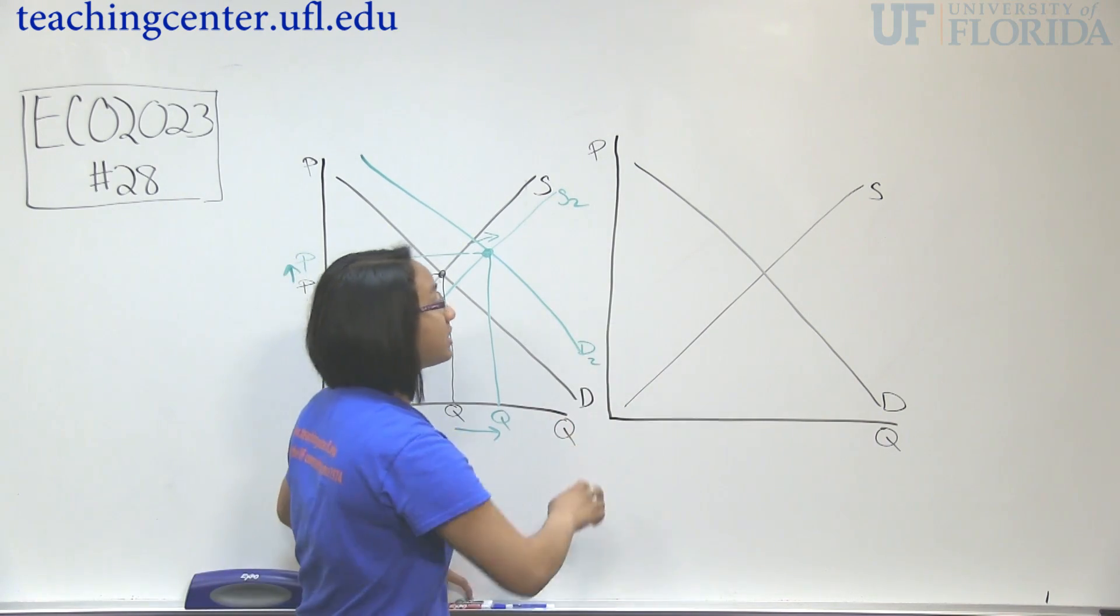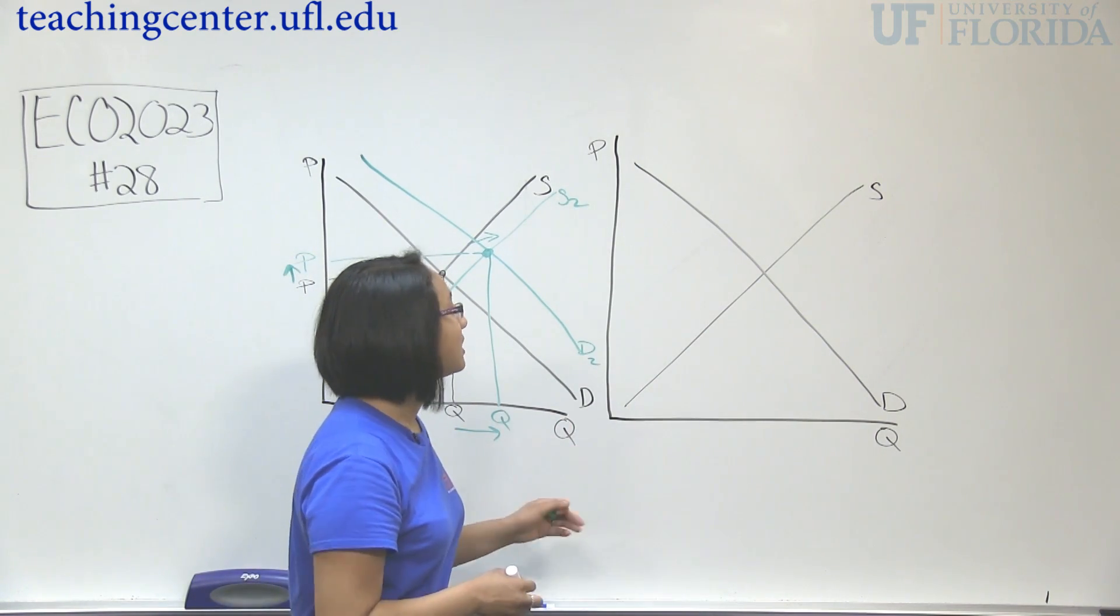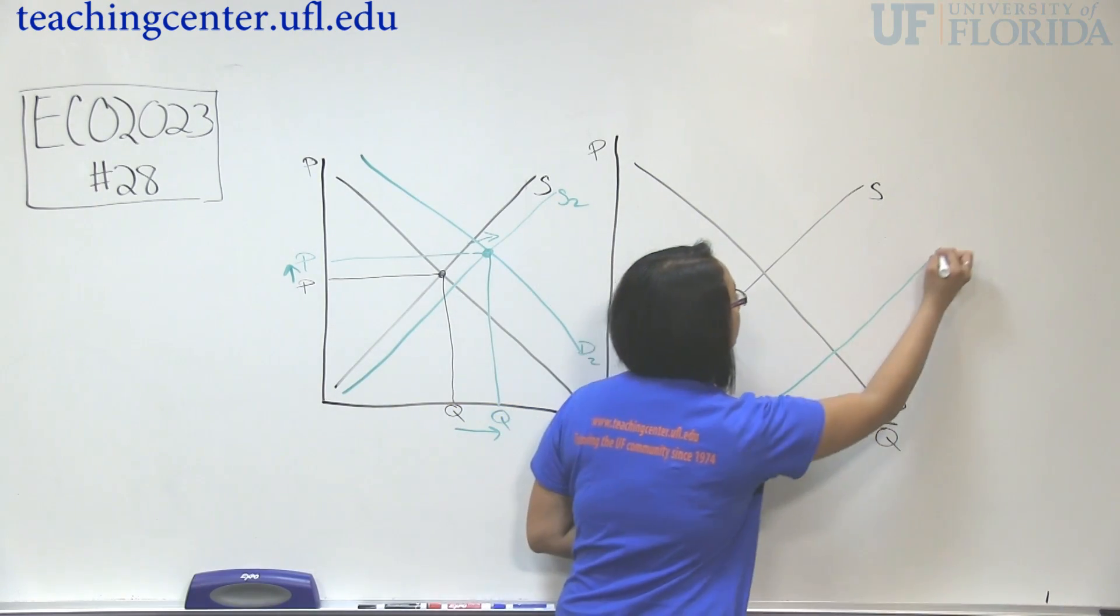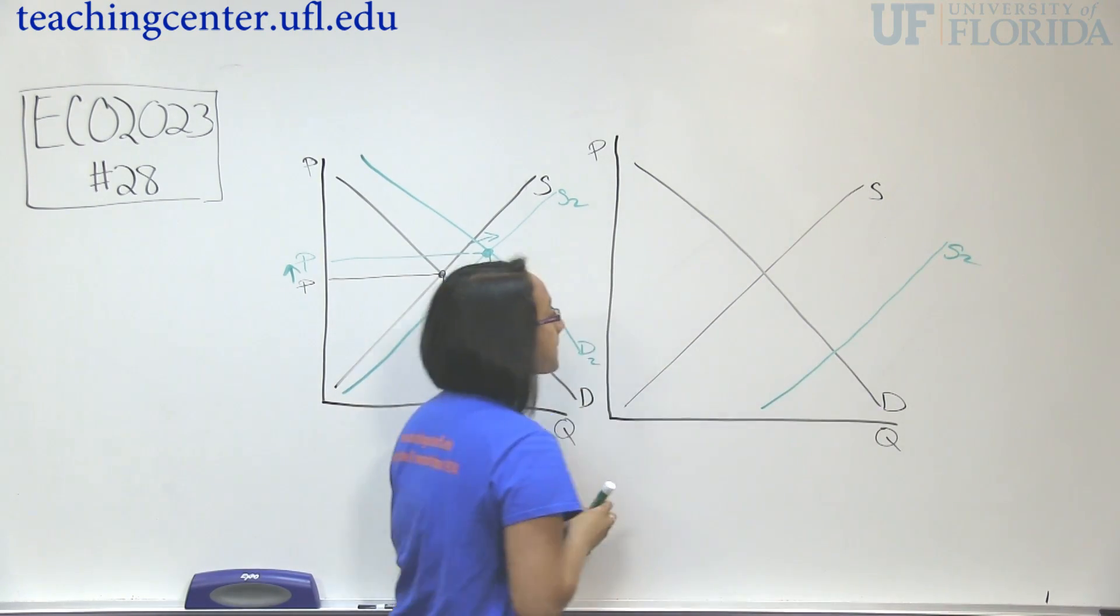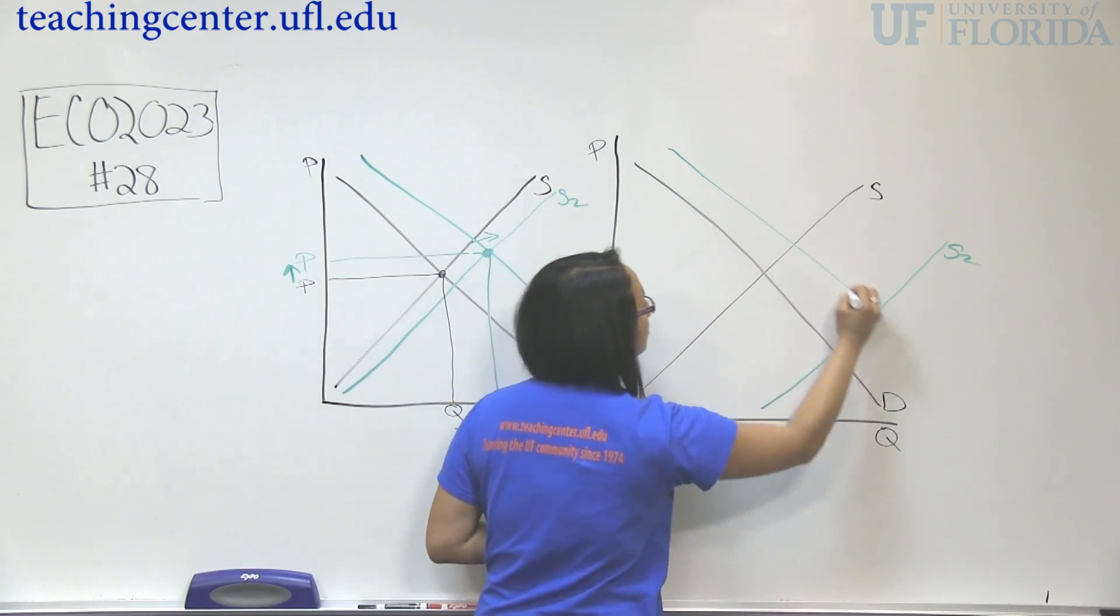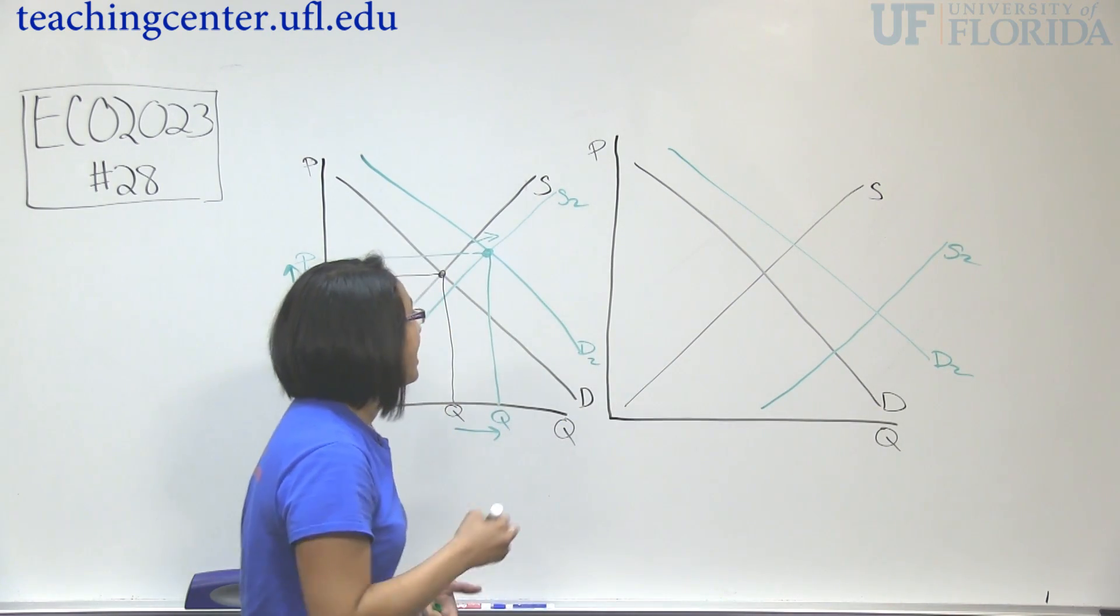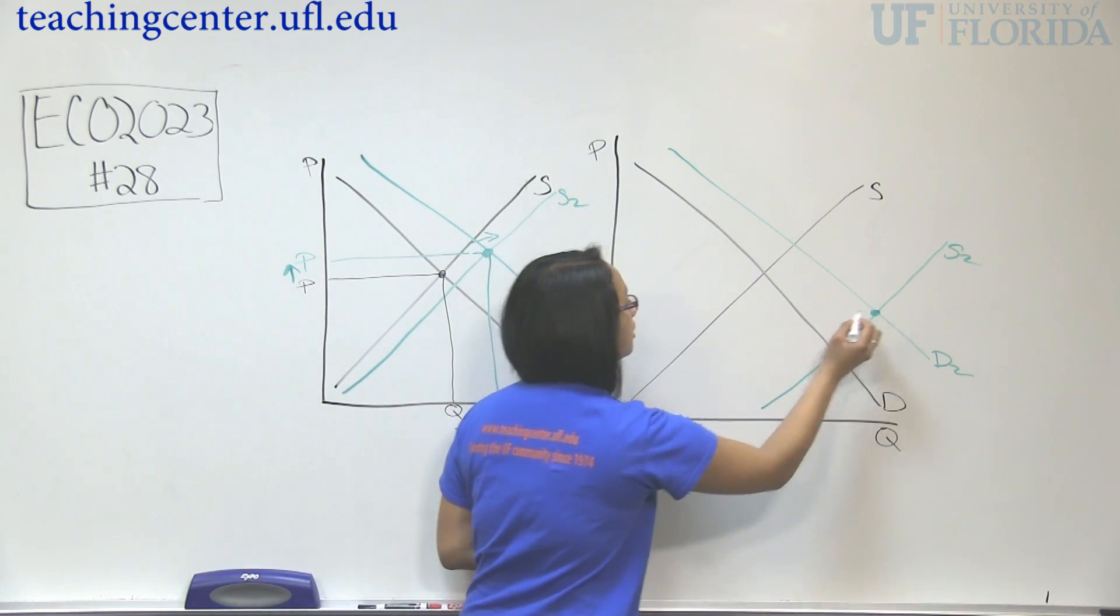In this graph, we're going to do the same changes, but there's going to be something different. So we know that supply increases, so I'm going to draw supply increasing. And we also know demand increases, so we're going to have demand increase here. And where is our new point? Here is our new point.